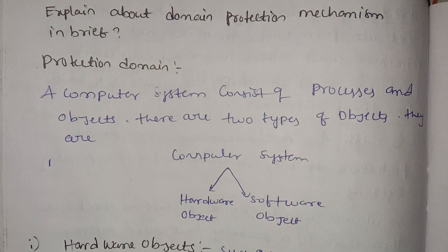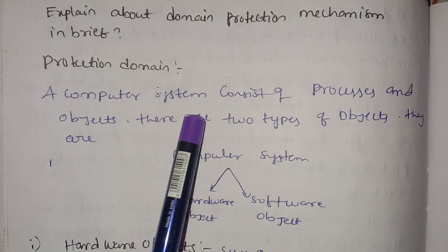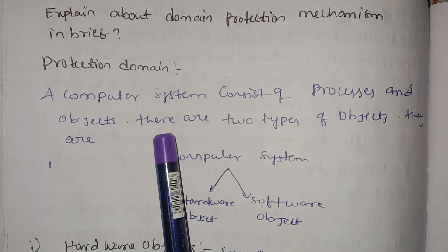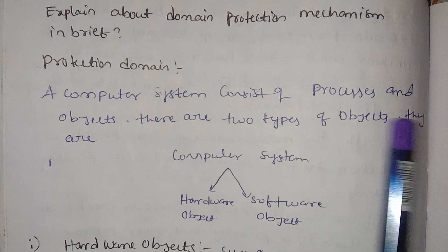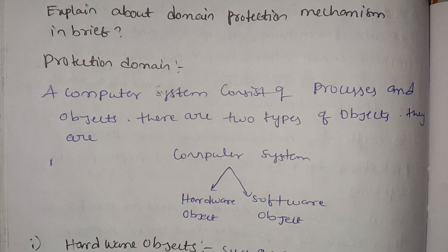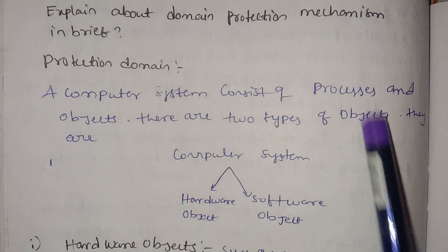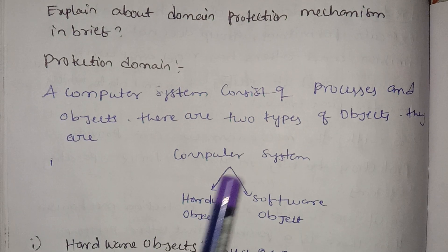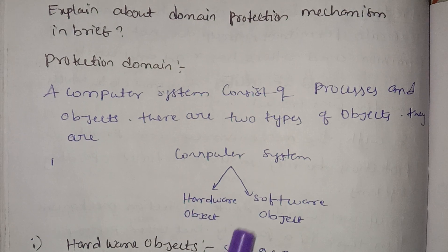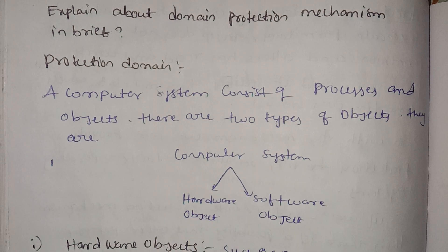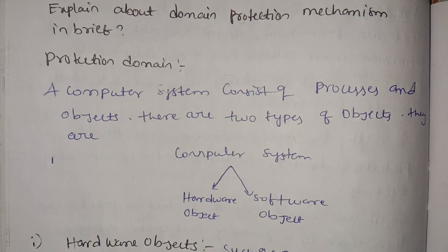The protection domain — a computer system consists of processes and objects. There are two types of objects in the computer system: hardware objects and software objects.